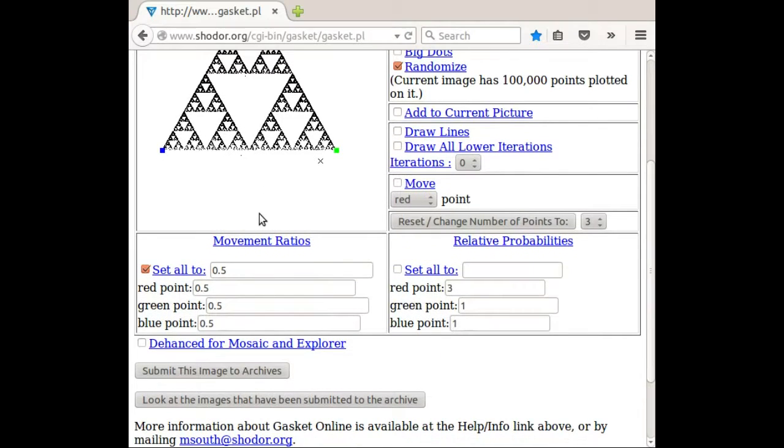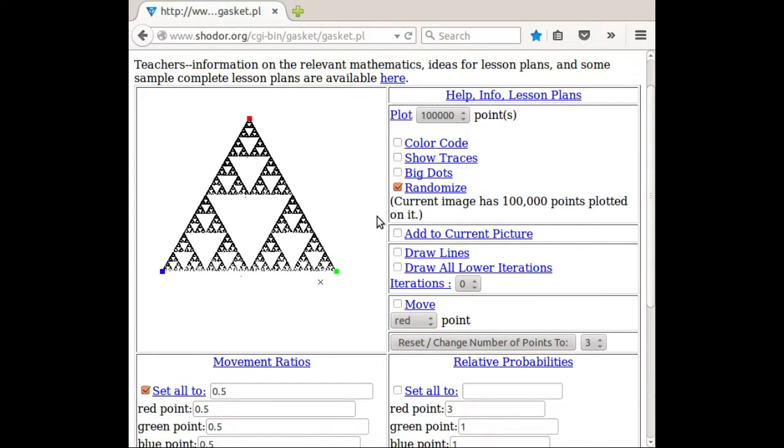So there's lots you can play around with here. You can change the movement ratios, you can make them different. I was keeping them all the same. You can change the relative probabilities as well. And then one last really fun thing you can do is you can change the number of points. There's no reason why we have to have three points. We could have four or five or six or seven. And then we would just with equal probability move halfway or whatever way to each point and iterate that.